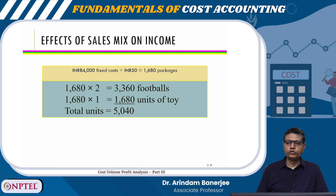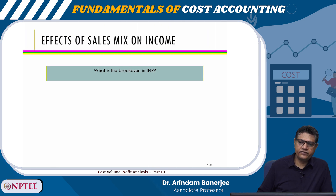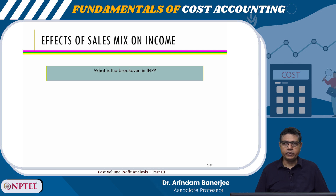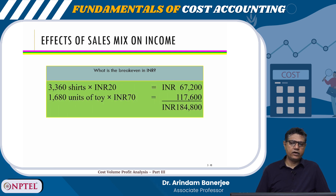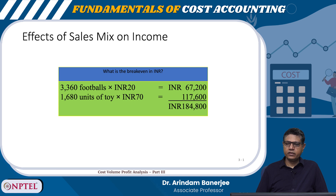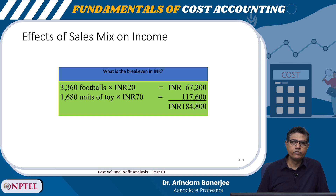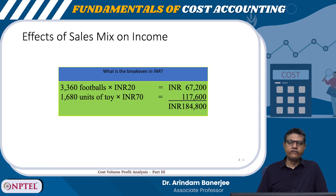At break-even, how many units? 1,680 packages × 2 footballs = 3,360 footballs, and 1,680 units of toy. So the total units are 5,040. The effects of sales mix on income: at break-even with the sales mix, we have 3,360 footballs × ₹20 = ₹67,200 and 1,680 units of toy × ₹70 = ₹1,17,600, giving a total of ₹1,84,800.